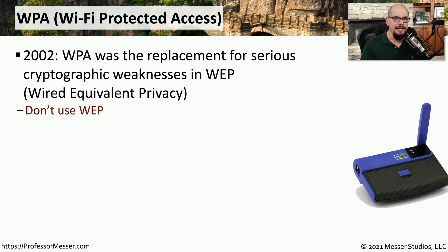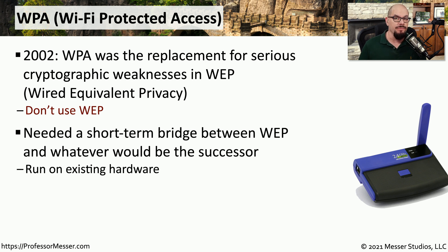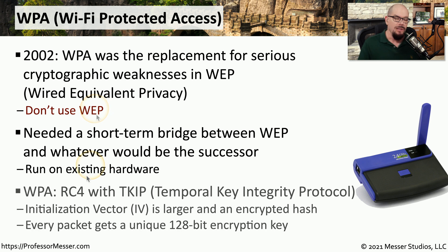One type of encryption you might find on a legacy wireless device is WPA — WPA without a number after it. This was the original version of Wi-Fi Protected Access, introduced in 2002 as a replacement for WEP, or Wired Equivalent Privacy. We found significant cryptographic vulnerabilities in WEP and immediately replaced it with WPA. WPA was created using an encryption cipher of RC4 along with a Temporal Key Integrity Protocol, or TKIP.